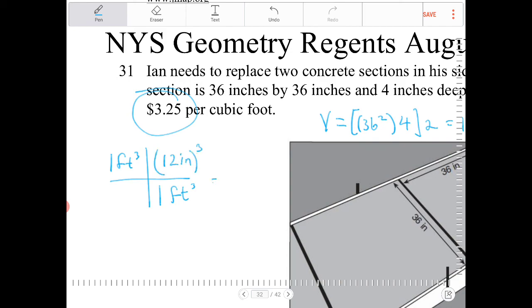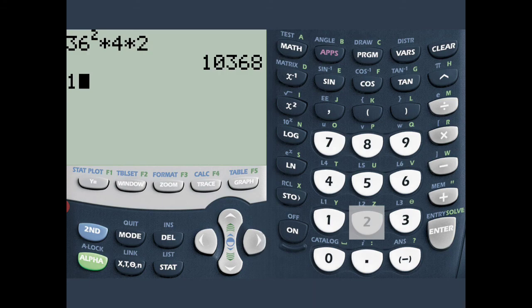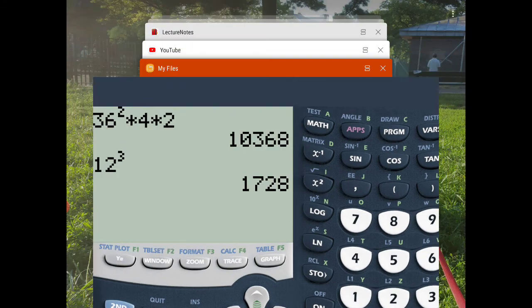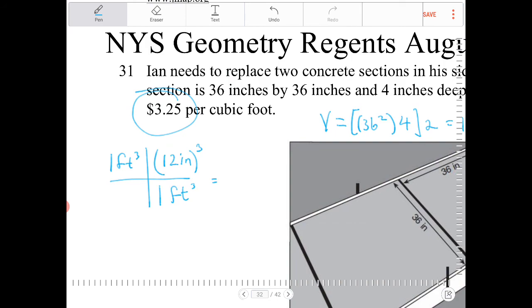So in other words, this is going to be 12 inches to the 3rd. 12 to the 3rd is 1728. So this is 1728 cubic inches. In other words, this is going to be $3.25 for every 1728 cubic inches.